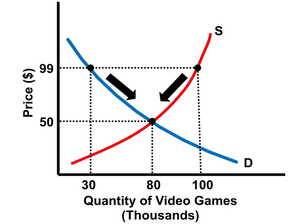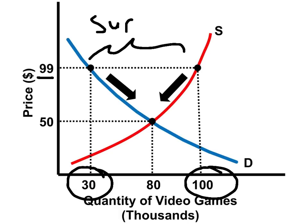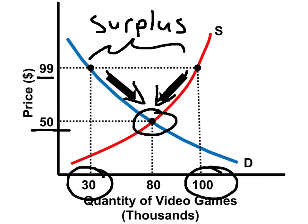Sometimes within a market, a temporary disequilibrium can occur. Suppose that the price of video games goes up to $99. At a price of $99, sellers are willing and able to provide the market with 100,000 video games. However, buyers are only willing and able to purchase 30,000 video games. What we have is a surplus of 70,000 video games. Competitive market forces will push the price downward, back toward the equilibrium price of $50, and then we have equilibrium restored.